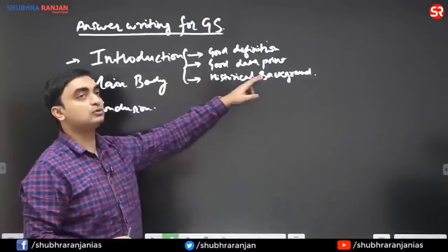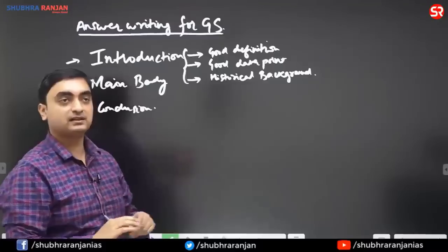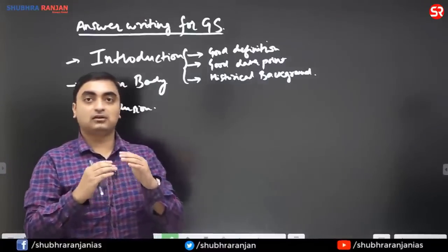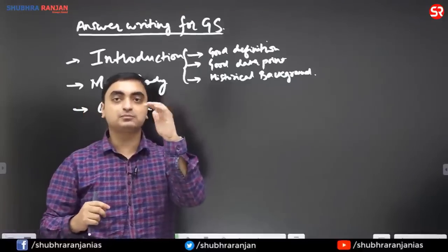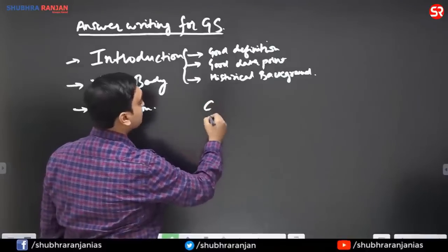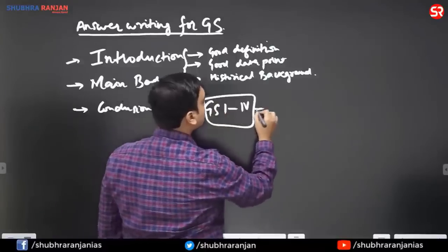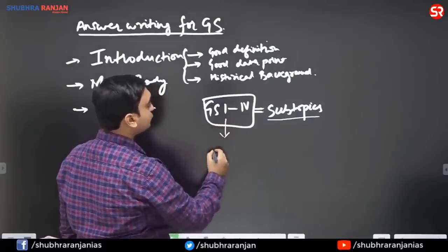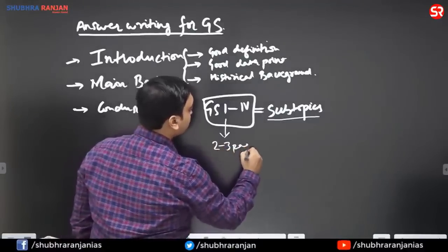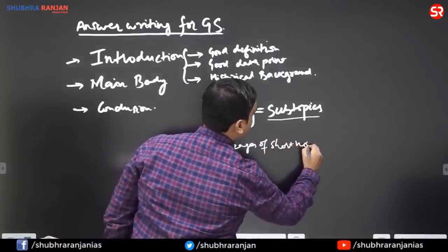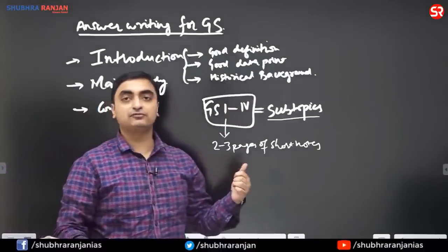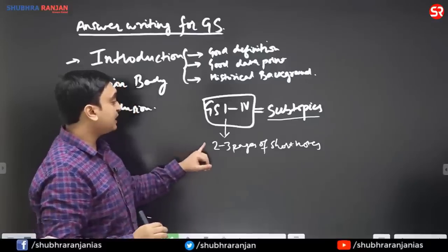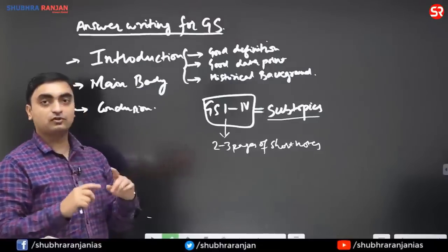People often wonder how to collect good data points on such a diverse range of topics. It seems difficult at first, but it is easy if you follow a method of creating small notes on each subtopic of the GS paper. There are four GS papers, GS1 to GS4. For each subtopic, I would advise you to make two to three pages of short notes. These short notes can be made from any newspaper, current affairs magazine, or standard book — a collation of all these — which can be used to write a good introduction.